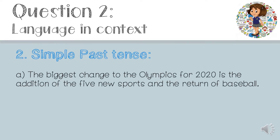I gave you a sentence which you had to change to the simple past tense. Number A: 'The biggest change to the Olympics for 2020 is the addition of the five new sports and the return of baseball.' First we need to find the verb in order to change the sentence to simple past tense. In this case the verb is 'is'. The simple past tense for 'is' is 'was', so the sentence reads: 'The biggest change to the Olympics for 2020 was the addition of the five new sports and the return of baseball.'